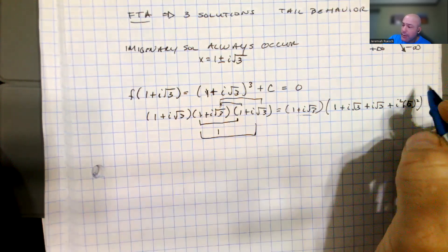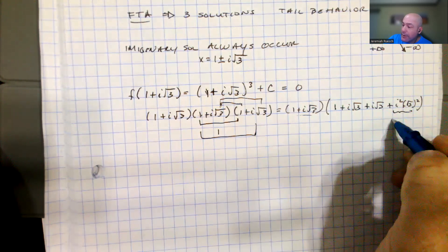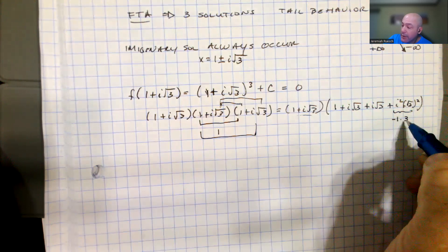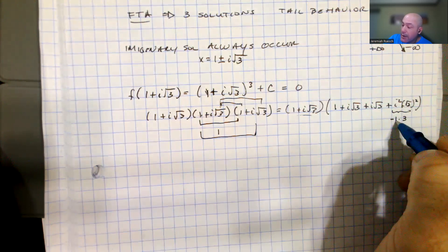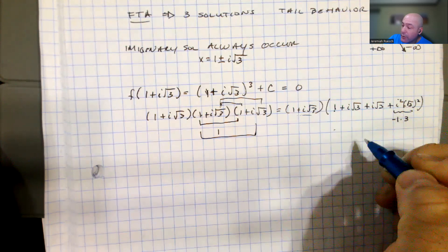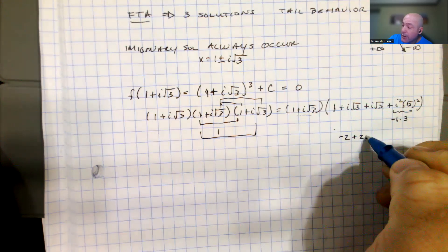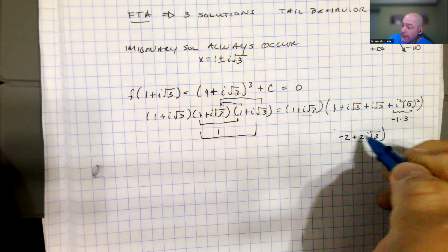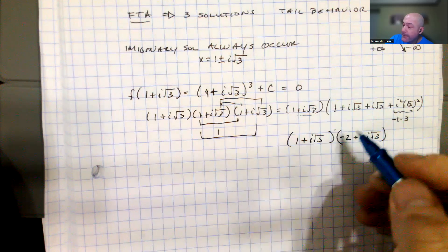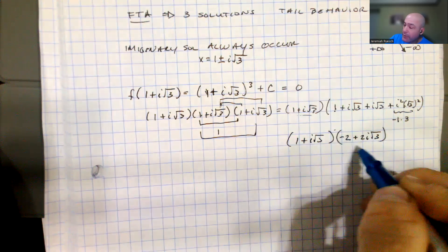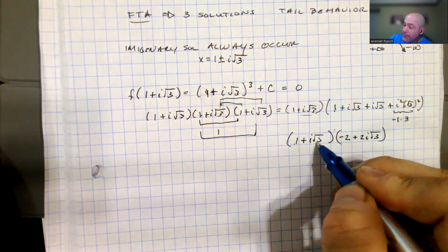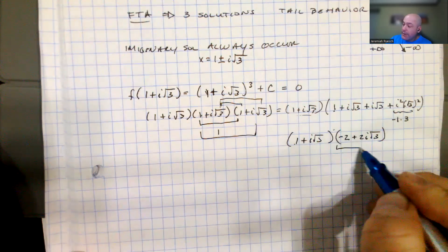Now i squared is negative 1, so if we simplify this, this is negative 1 times the square root of 3 squared, so this is going to be negative 1 times 3, or this comes out to be negative 3. Negative 3 plus a positive 1 makes this whole value negative 2 plus 2i square root of 3. That's the result of multiplying that out. I have to multiply that by i square root of 3.